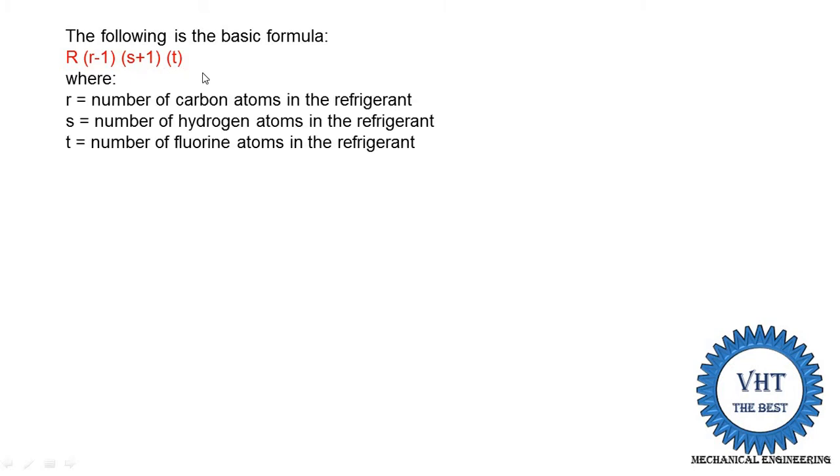The basic formula is R(r-1)(s+1)(t), where r is the number of carbon atoms in the refrigerant, s is the number of hydrogen atoms, and t is the number of fluorine atoms. If you want to learn the complete designation and trick for how refrigerant names are written, the link is provided at the top right of the screen and at the end of the video.